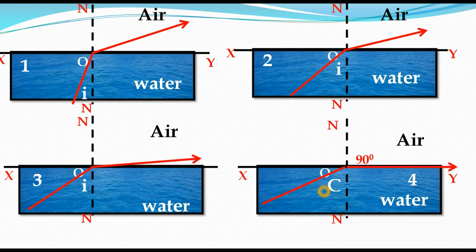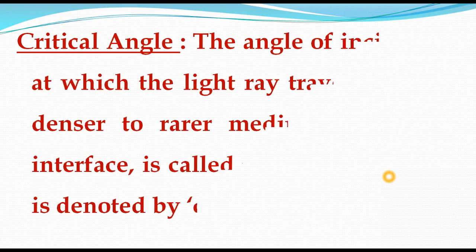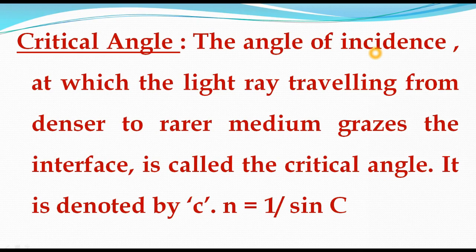So what is the Critical Angle? If the angle of refraction is 90 degrees, then the corresponding angle of incidence is called the Critical Angle. The light ray travels from denser to rarer medium, and the refracted ray grazes — meaning it touches the surface of the medium. The angle of incidence at which the light ray travelling from denser to rarer medium grazes the interface is called the Critical Angle, denoted by C. There is a relation between refractive index and critical angle: N = 1 / sin C.